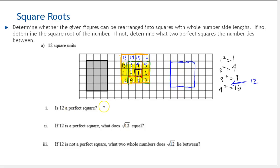So is 12 a perfect square? Well, our answer is no, because it didn't fit into one of our squares. It went beyond it. If 12 is a perfect square, what does square root of 12 equal? Well, not a perfect square. If 12 is not a perfect square, what two whole numbers does square root of 12 lie between? And we saw it lies between 3 and 4. So when you see this square root symbol, it's asking what number multiplied by itself equals 12. That's what the square root of 12, so we pronounce this as the square root of 12 or radical 12. That's what this mathematical operation is asking you to perform.